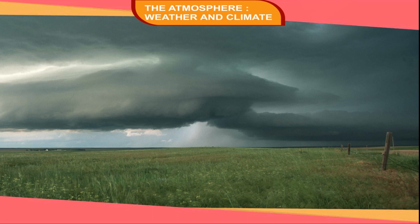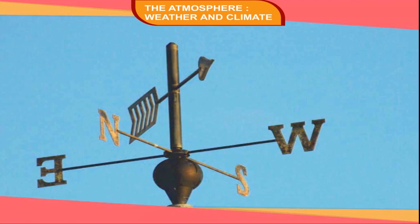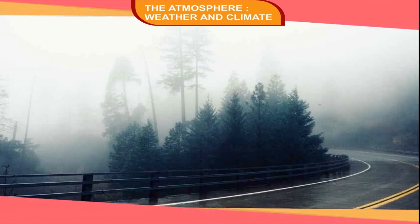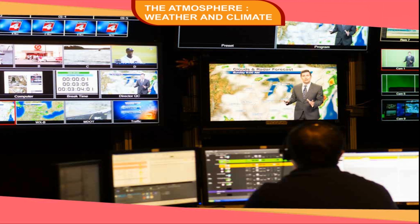The climate stands for a generalized picture of the weather conditions of a given place. Hence, the elements of weather and climate are the same. They are temperature, pressure, wind speed and direction, humidity, precipitation, sunshine, etc. We usually get information about the weather from weather reports and forecasts published in newspapers or broadcast over radio and television. Let us now learn about some of the elements that determine weather and climate.